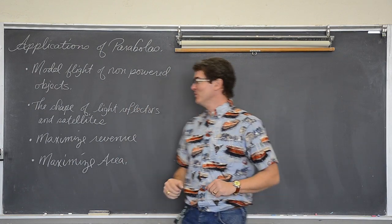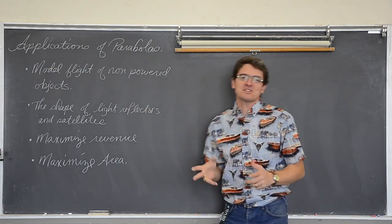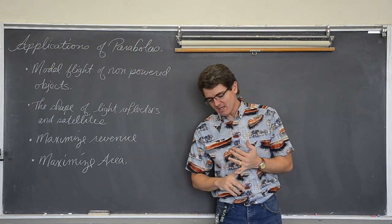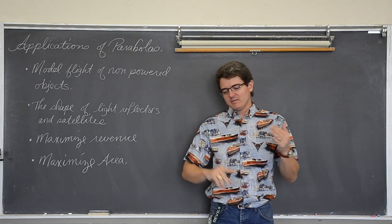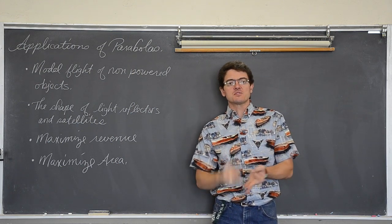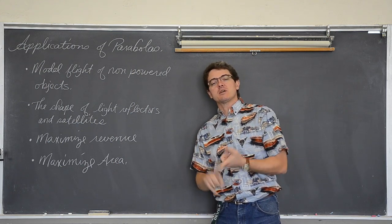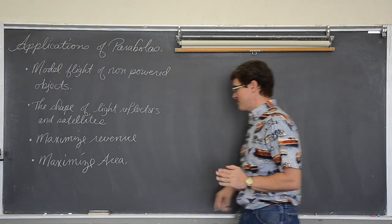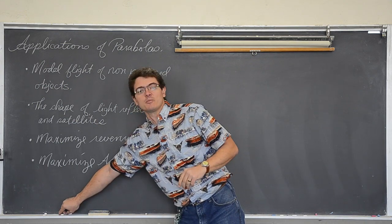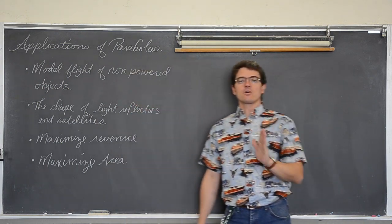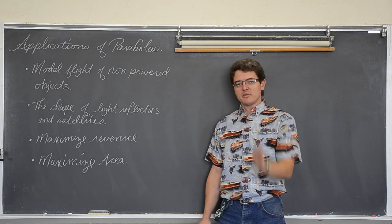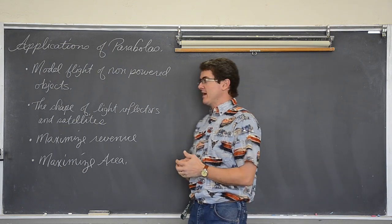Hello, Mr. Tarrou! Now we just got done talking about parabolas. We found their vertexes, their x-intercepts, their y-intercepts. We talked about their axis of symmetry, which if the x term is the one that is squared, is a vertical line going through the x component of the vertex.